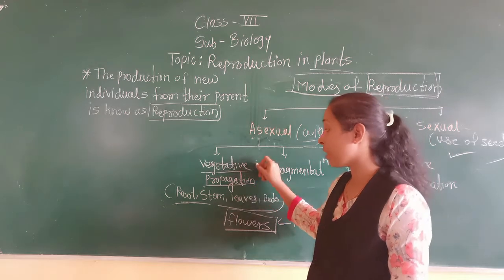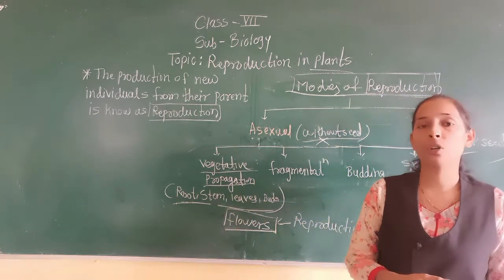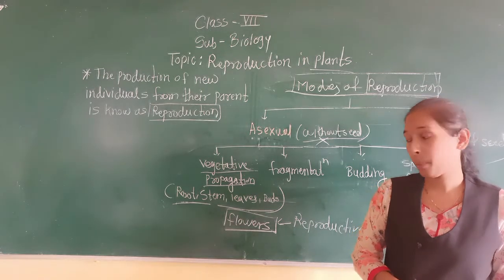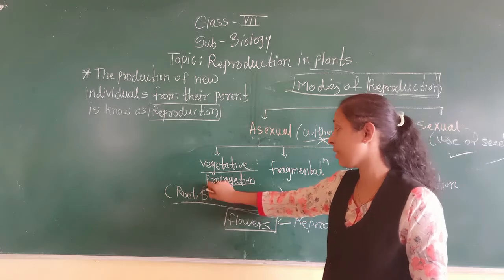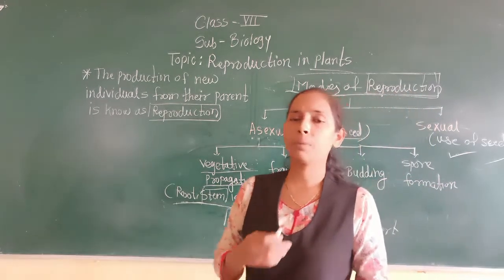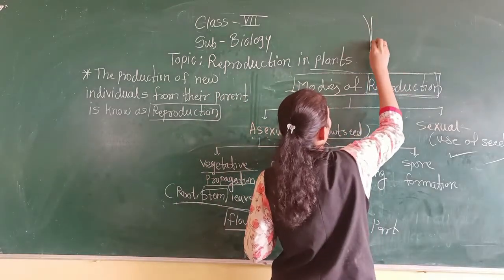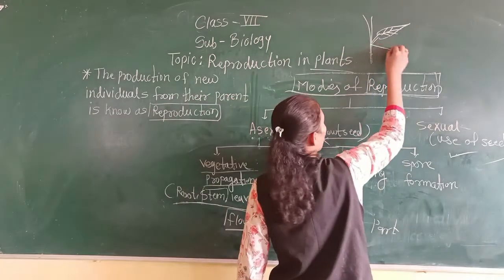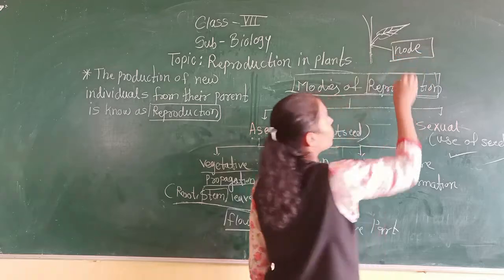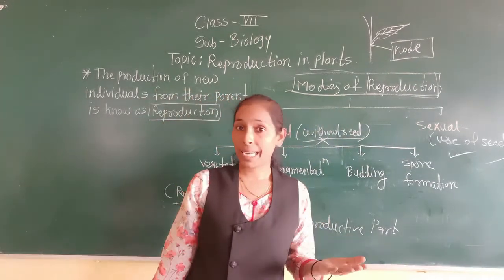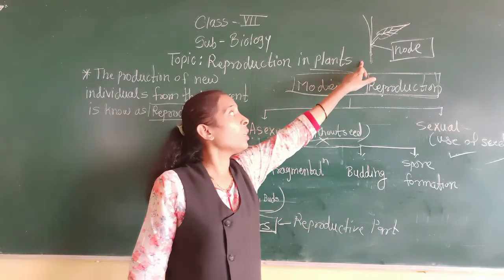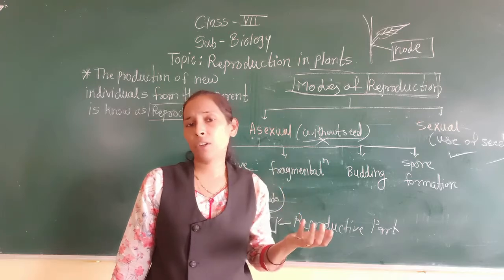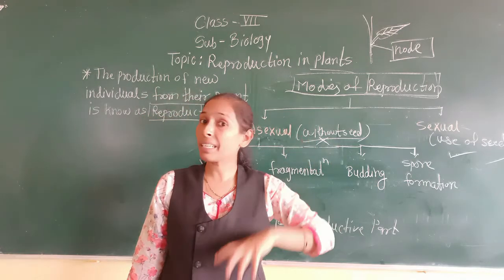Because vegetative parts are used for the reproduction, that reproduction is called vegetative propagation. Let's discuss vegetative propagation with the help of the stem. On the stem, where the leaves arise, that portion is called a node. We have to take one cutting that should contain the node, and put it into the soil for certain days. We have to water that cutting, and after a certain period of time you can see that cutting grow into a new plant.